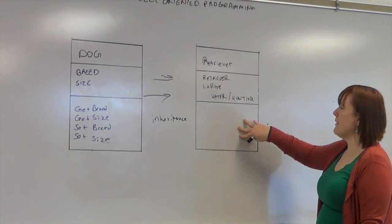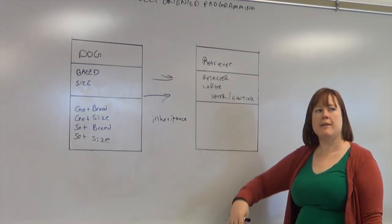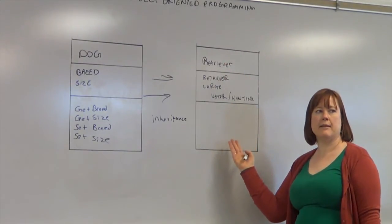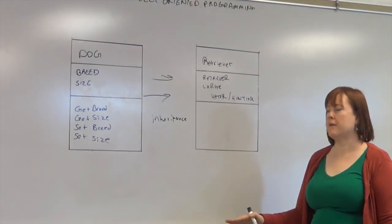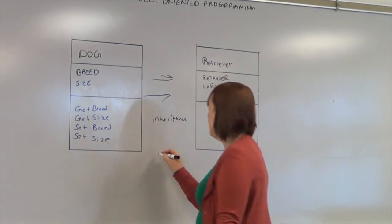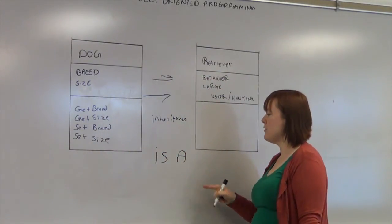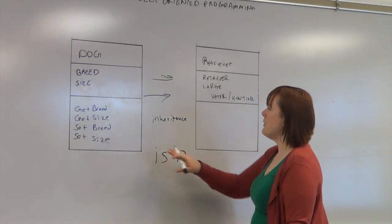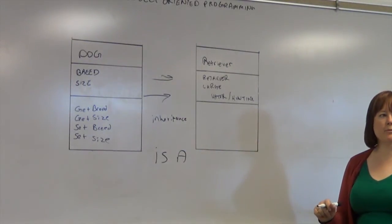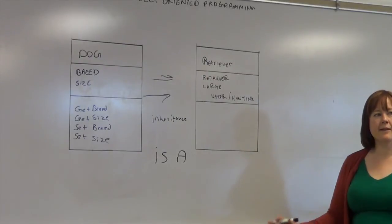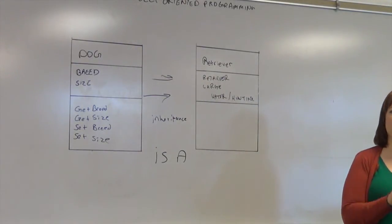So when you inherit something, a retriever is still a dog. And anything that would apply to a dog would absolutely apply to a retriever. But it may have other special characteristics. So we say that it is a, a retriever is a dog. And then you know that it belongs to that parent class. And we can do that in programming as well, where we have a basic class, say shape.